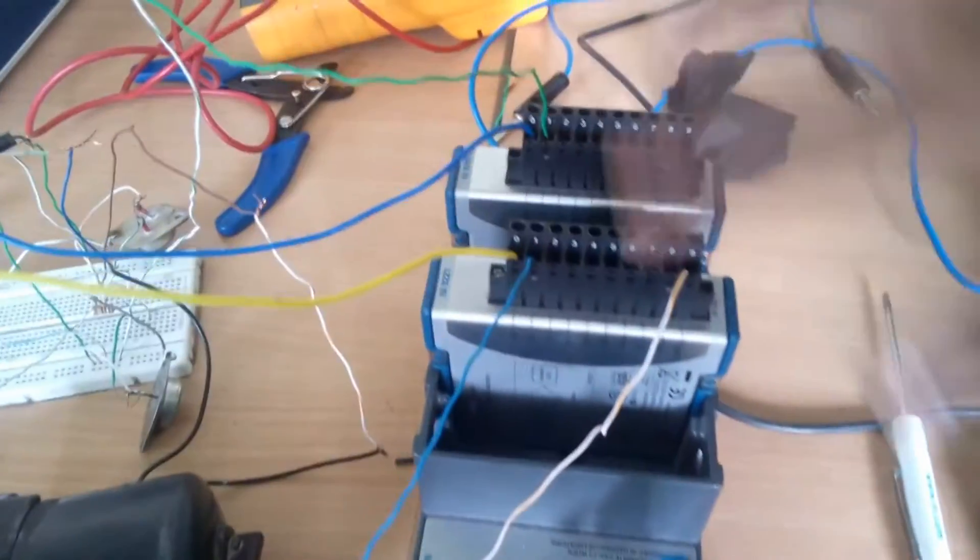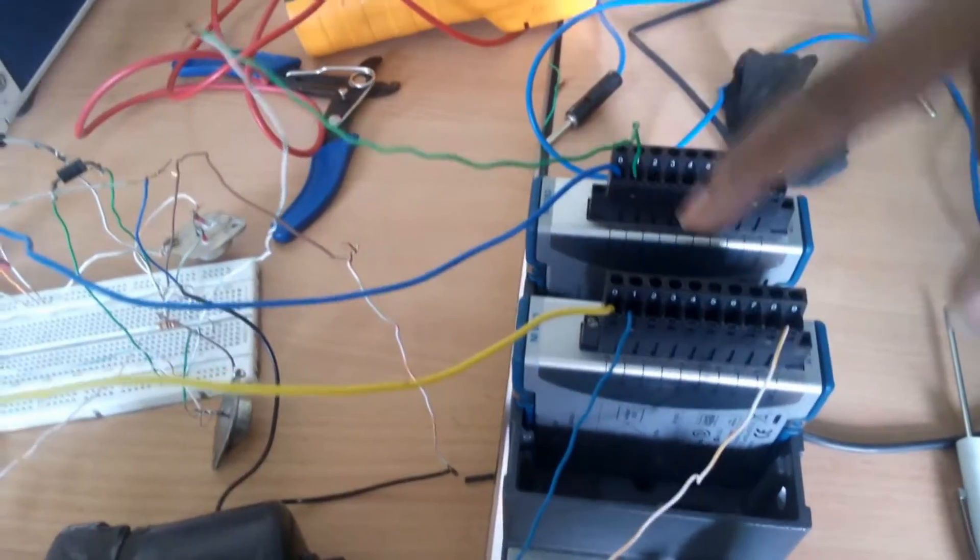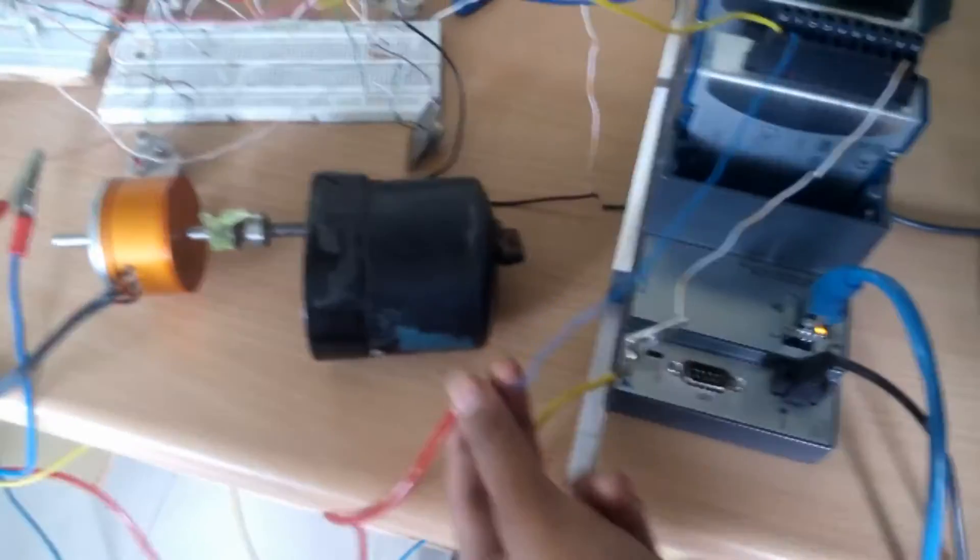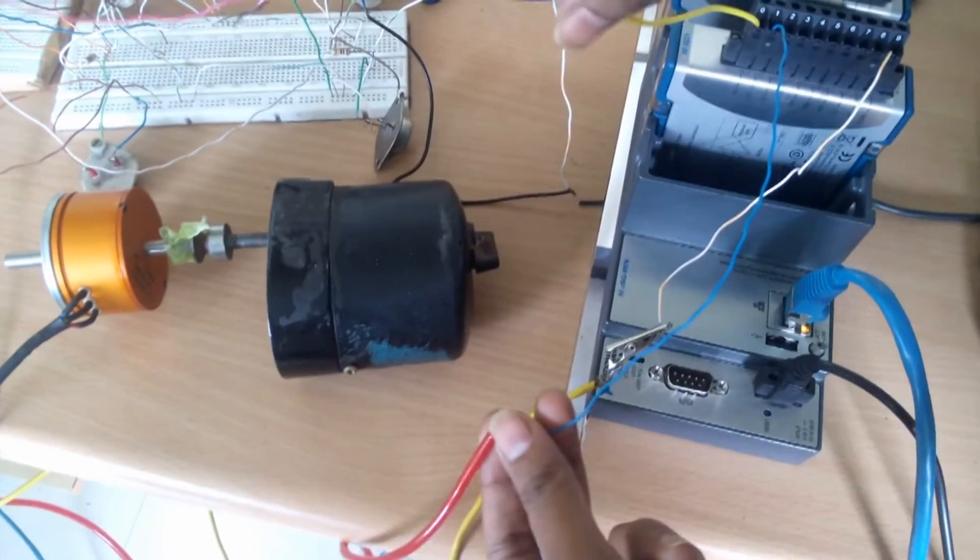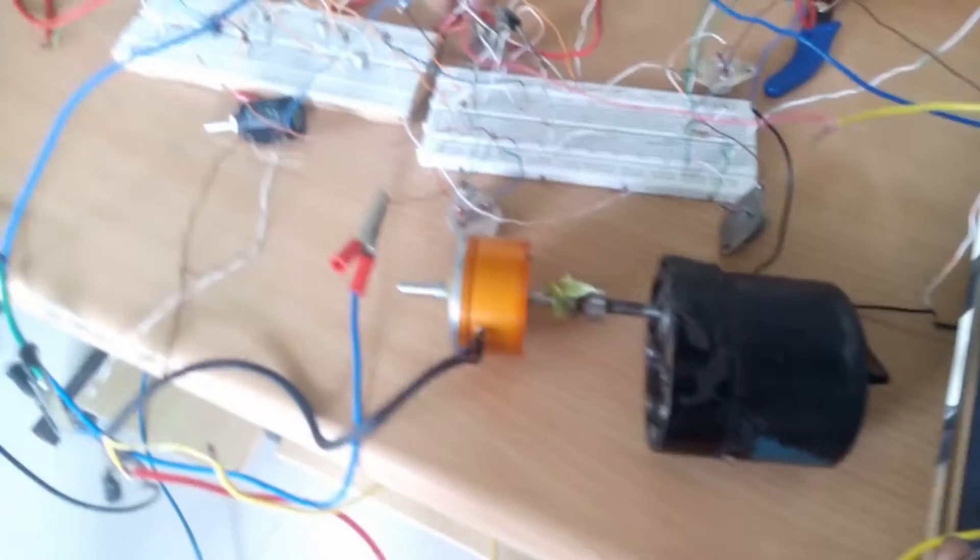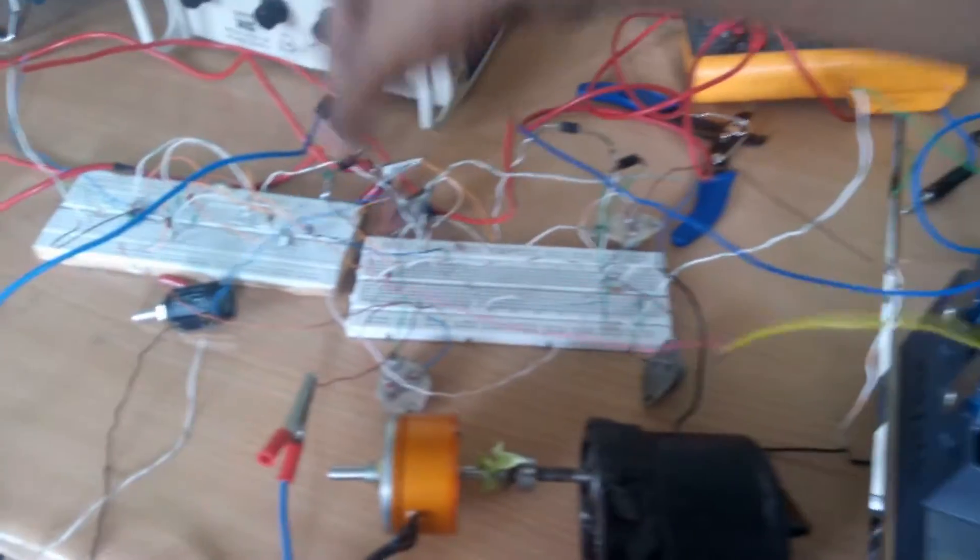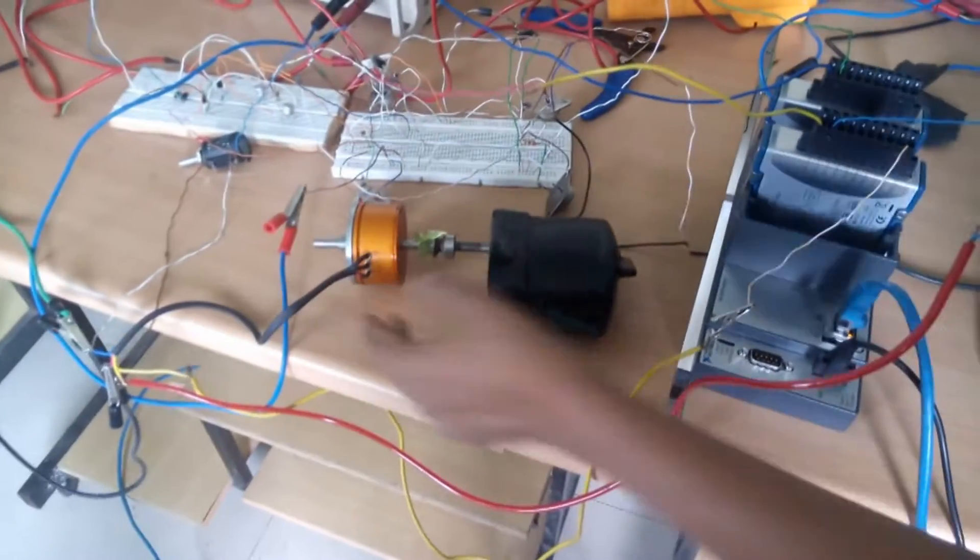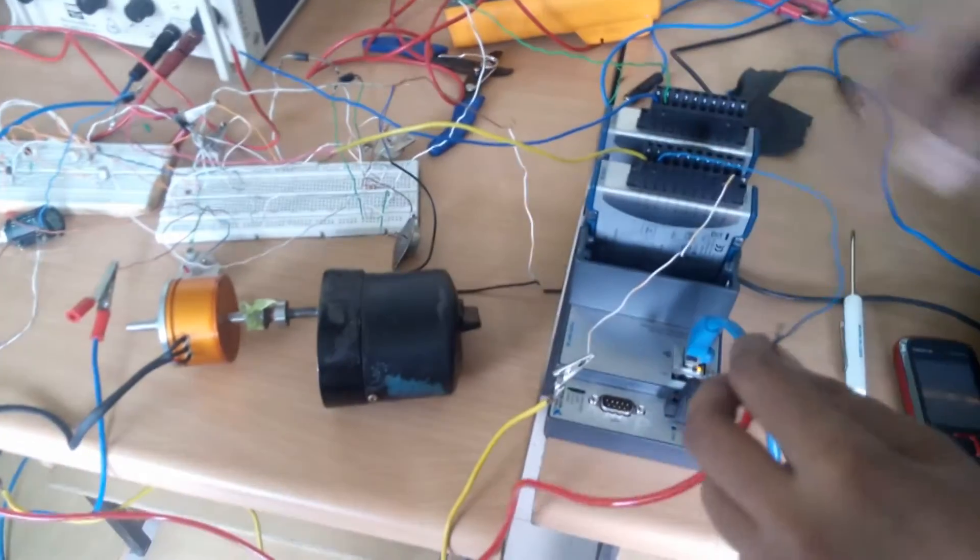And these are the modules. This is NI9211 means it is the input module. And this is 9263 that is output module. Here it is numbering given on this. And here we are given the two inputs to the NI9211. Of which one is the process variable given from the input, it is the set point given from the input port. And this is the process variable given from the output port connected to the motor. And the output of this error is given to the NI9263.